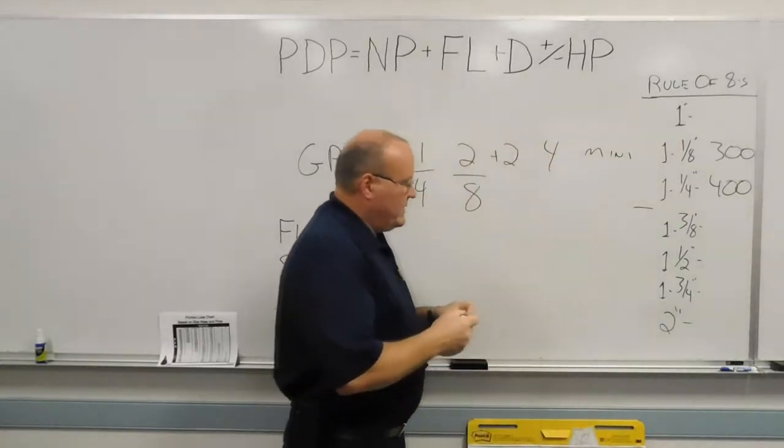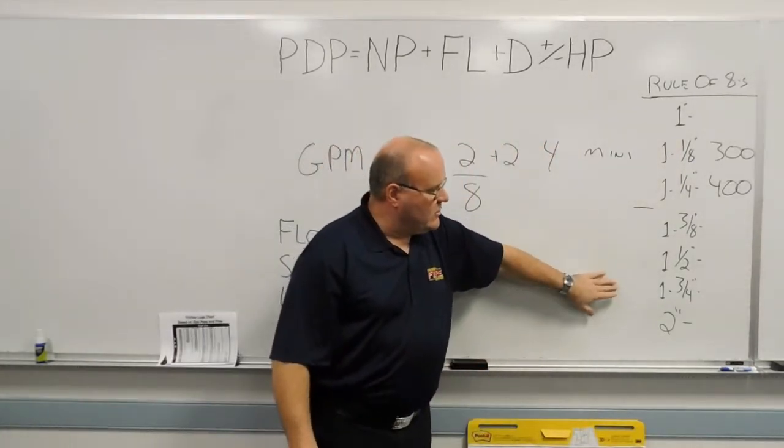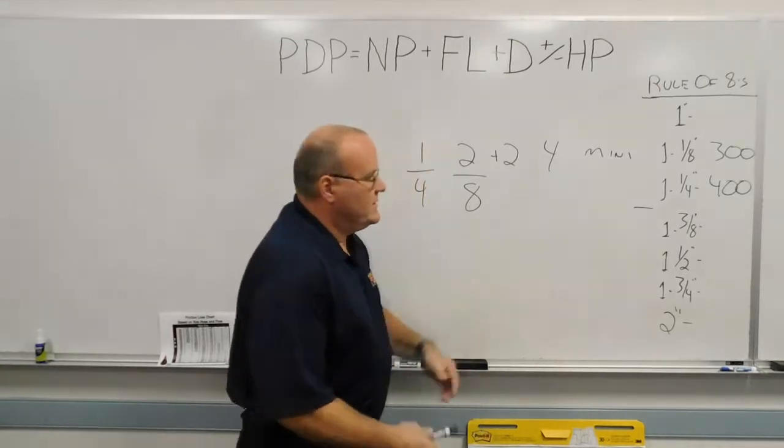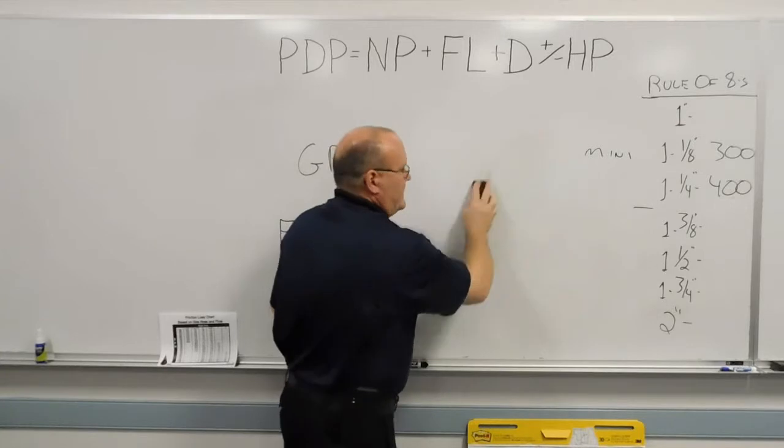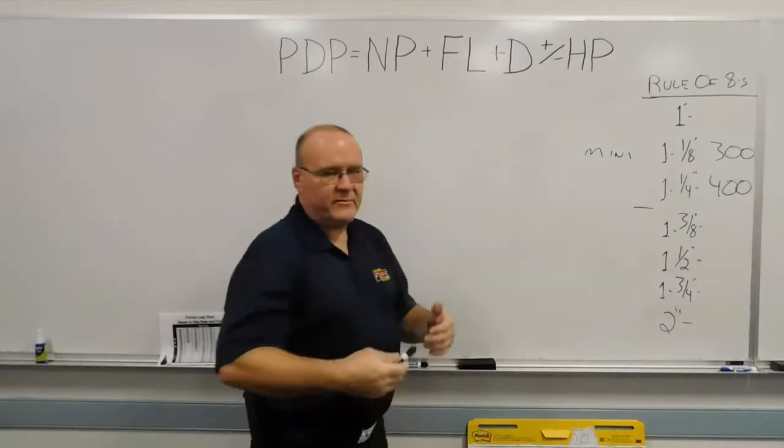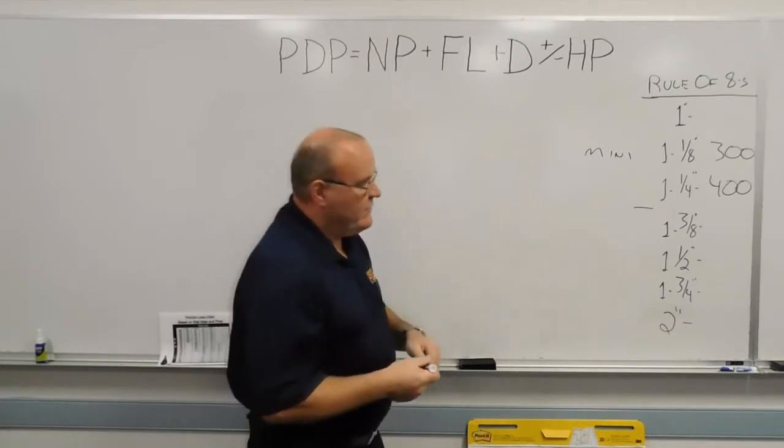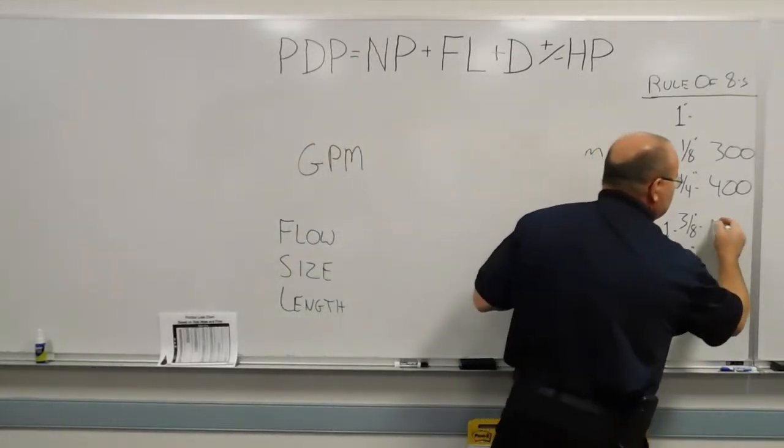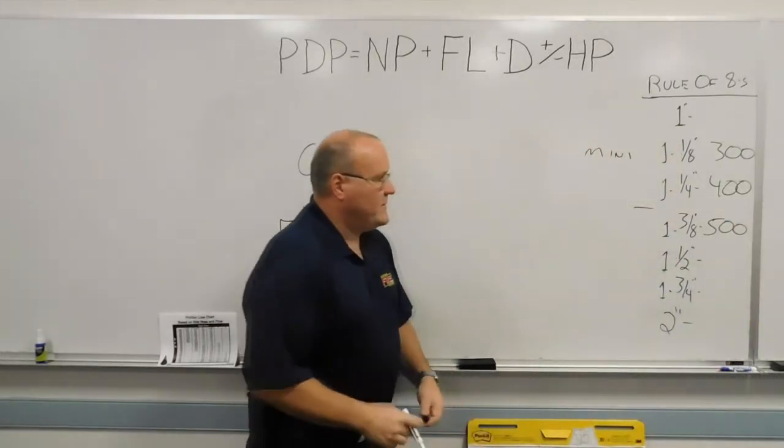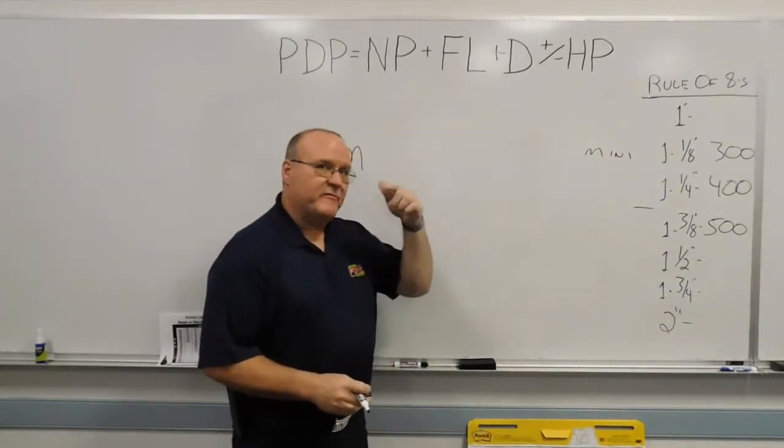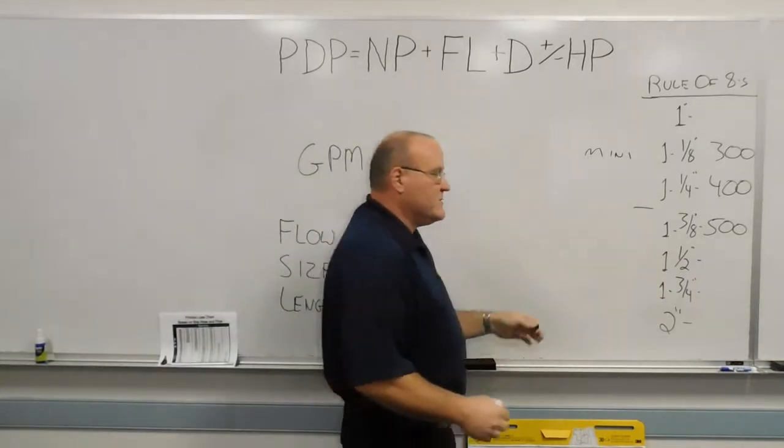And then as we work right on down the line, inch and three-eighths, inch and a half, inch and three-quarter, and two-inch, you can see that the gallon per minute flow, what that would be. So inch and three-eighths, three-eighths is already eights. Three plus two, that top number will give me five, 500 gallons a minute. The inch and a half to make one-half eights will be four over eight. So four plus two will be six, 600 gallons a minute.